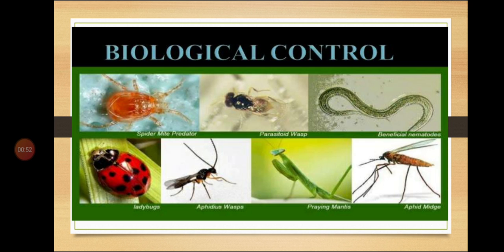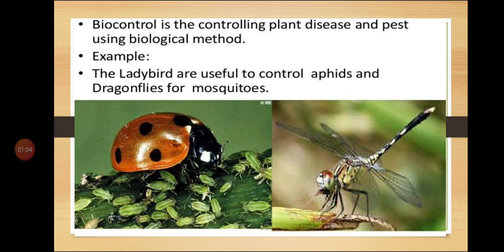Today we are going to study about the role of microbes as a biocontrol agent. Biocontrol is the controlling of plant diseases and pests using biological methods. For example, ladybirds are useful to control aphids and dragonflies for mosquitoes. The term biocontrol refers to the use of biological methods to control diseases and pests.